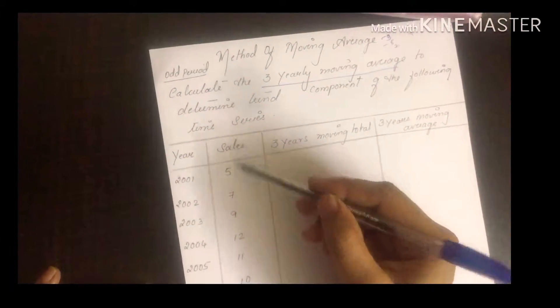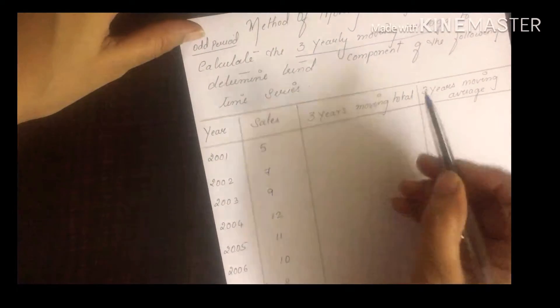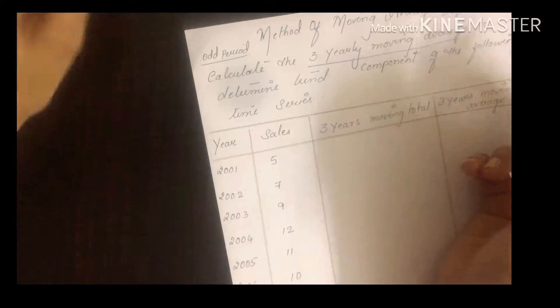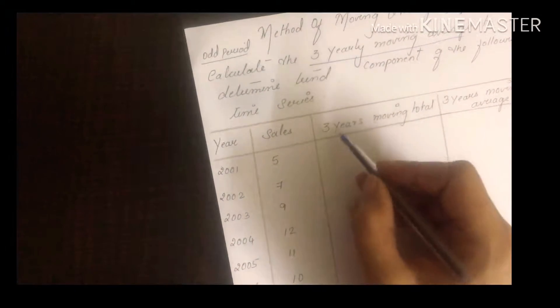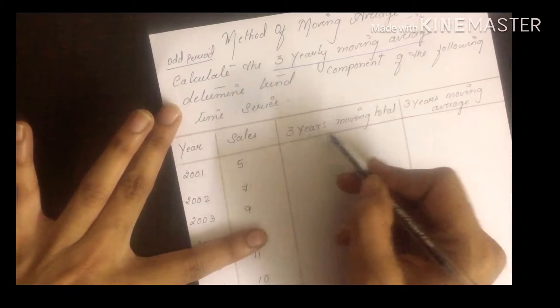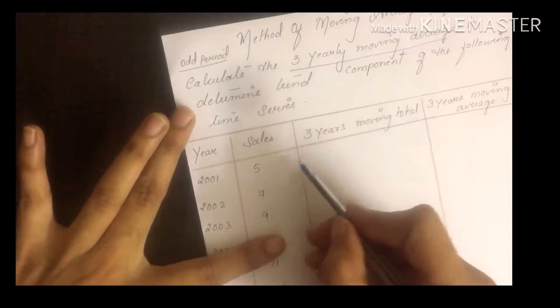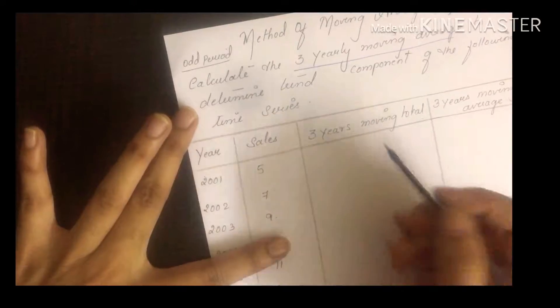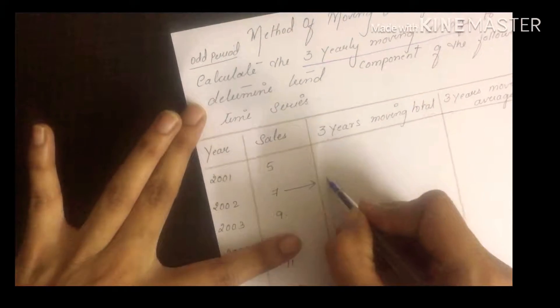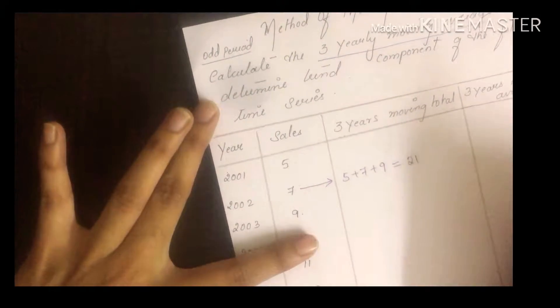Here year is given and sales is given. For 3 years moving average, whatever period they give - 3 years, 5 years, 7 years - you do likewise. For 3 years moving average, first you calculate 3 years moving total. Now the question is where to write this - here or here? You take the middle of these three, the center. So the center is here.